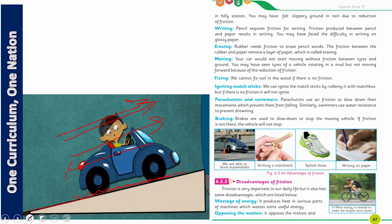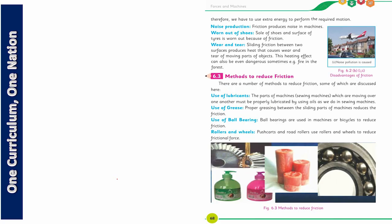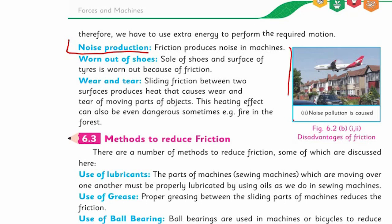Noise Production — آپ کو پتا ہے ہوائی جہاز اور گاڑیوں میں جو آواز پیدا ہوتی ہے وہ friction کی وجہ سے ہوتی ہے۔ Friction produces noise in machines جب مختلف parts آپس میں slide کرتے ہیں تو آواز پیدا ہوتی ہے۔ یہ آواز بھی انرجی ہے اور اس پر ہماری انرجی صرف ہوتی ہے۔ اگر فریکشن کم کریں تو یہ شور بھی نہیں ہو گا اور ماحول کو بھی نقصان نہیں پہنچے گا۔